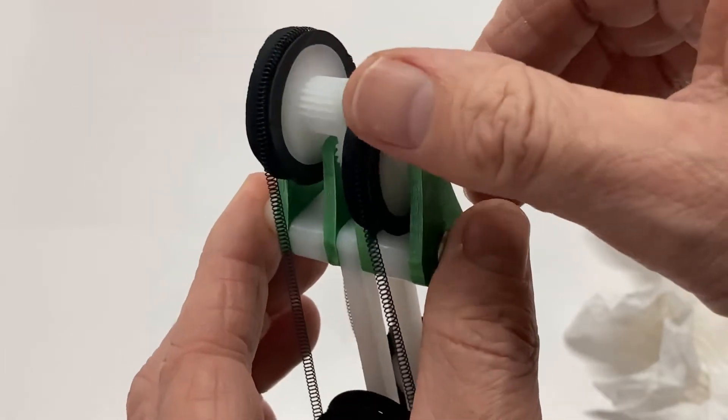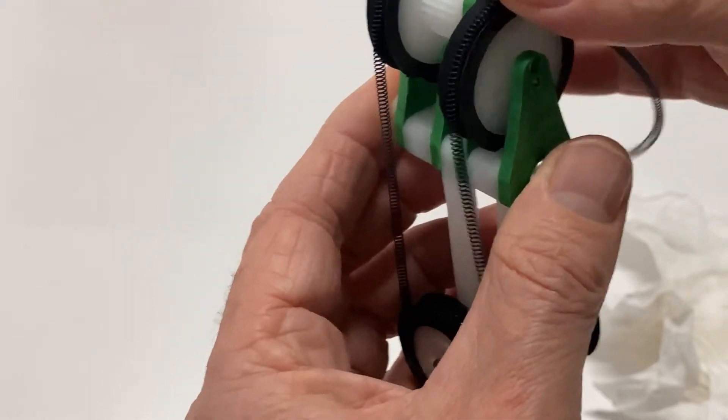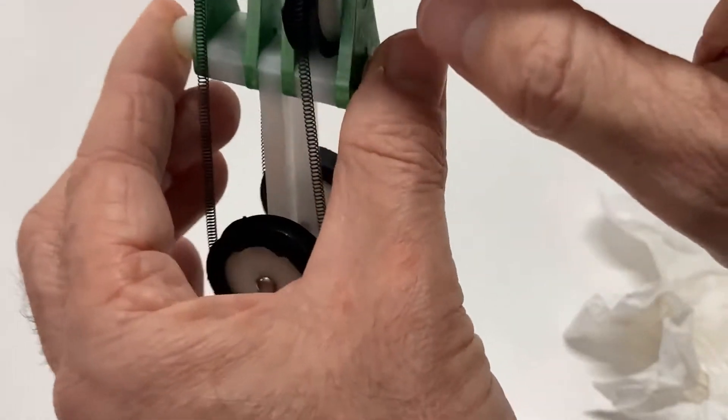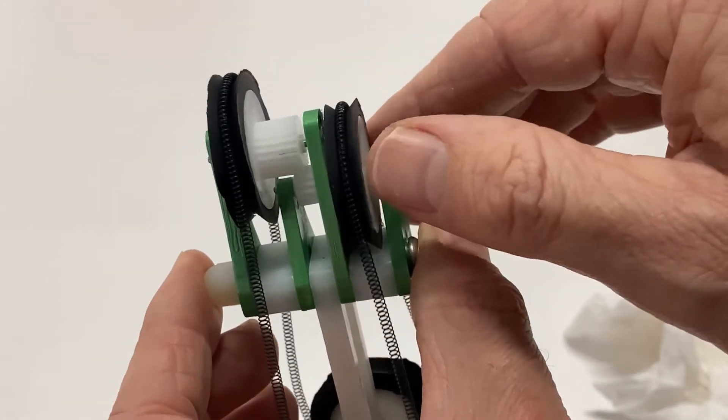For continuous operation, the loop of shape memory alloy must be cyclically stretched and then contracted by heating. The engine uses these gears to do the stretching.